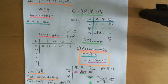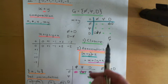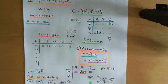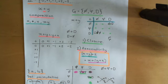The first axiom is quite simple to understand. That's closure. Closure means that all of the entries in this composition table have to be from your original group.